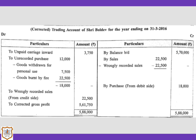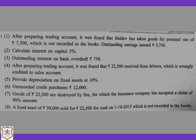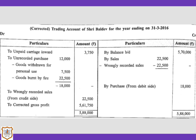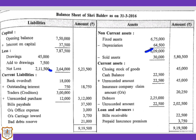The amount of Rs. 5,70,000 from the trial balance will be shown on the credit side of the corrected trading account. For adjustment one, goods withdrawn for personal use of Rs. 7,500 will be deducted from purchases on the debit side of the corrected trading account. For the second effect, it will be shown on the liability side of the balance sheet by adding Rs. 7,500 to drawings, which is already given in the trial balance as Rs. 45,000.